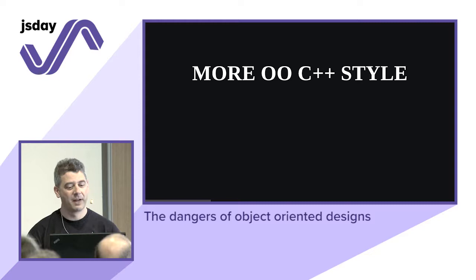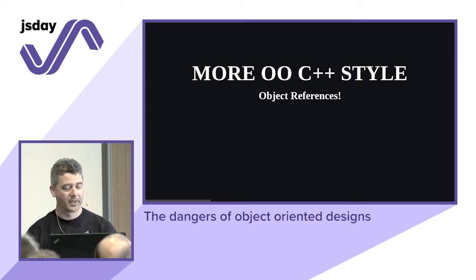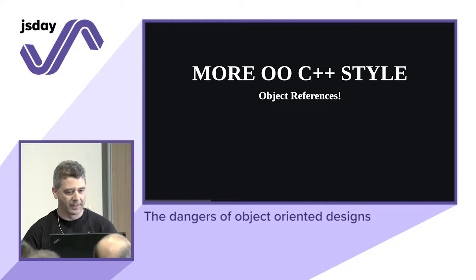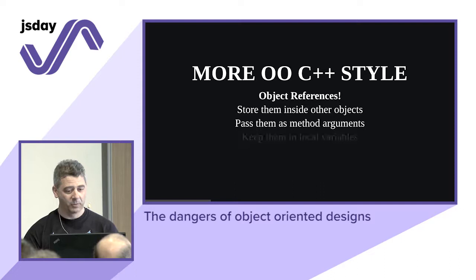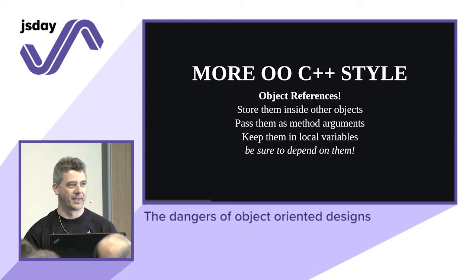More C++ style object orientation — Java is the same — you have object references. Inside objects you store state, but you also store references to other objects. You do this all the time; you probably wouldn't be able to write code without it. You store them in objects, pass them as method arguments, keep them in local variables, and depend on them constantly.